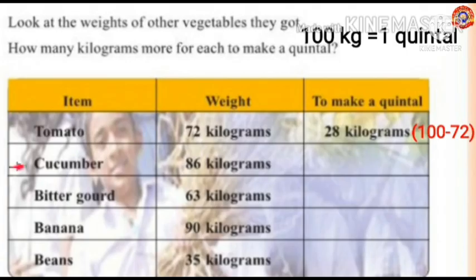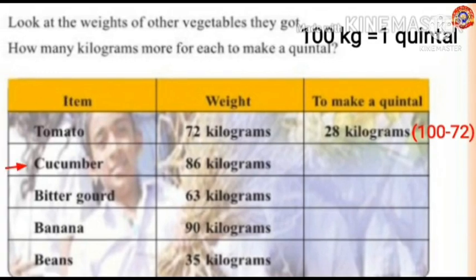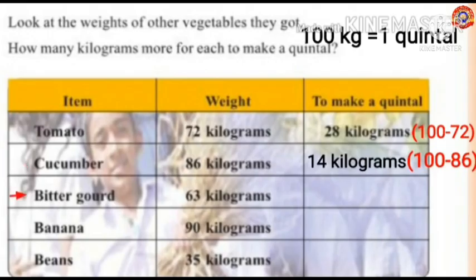Next, cucumber. How much is the weight of cucumber? 86 kilograms. So how many more kilograms does cucumber need to make a quintal? To find out, subtract 86 from 100: 100 minus 86 equals 14. To make a quintal, 14 kilograms are needed.